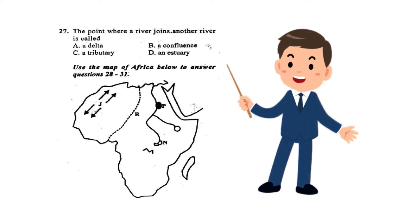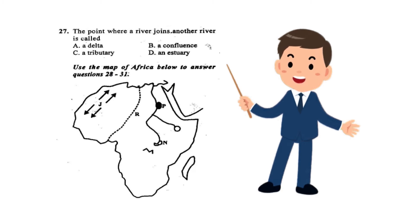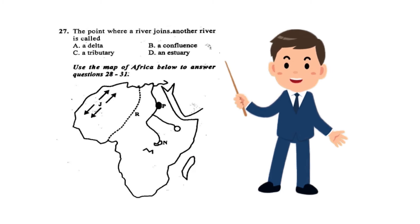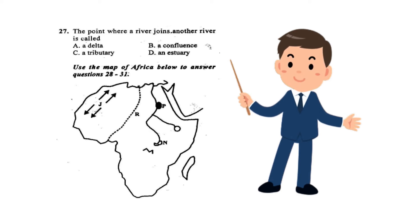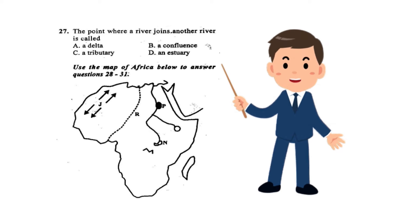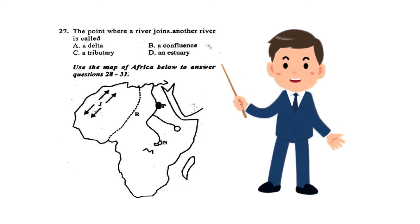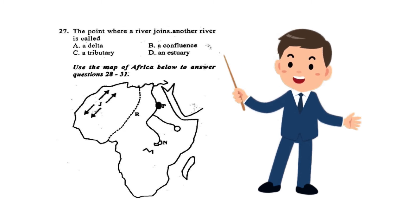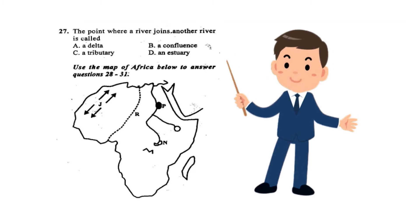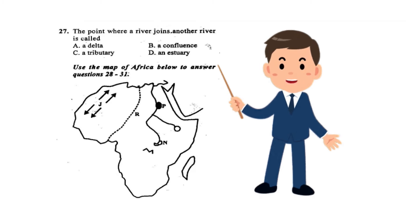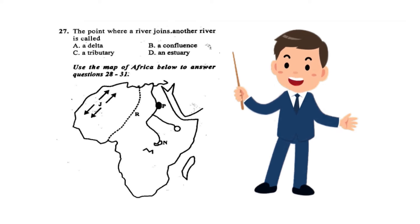Question 27. The point where a river joins another river is called: A. a delta, B. a confluence, C. a tributary, or D. an estuary.